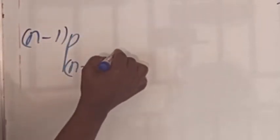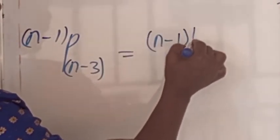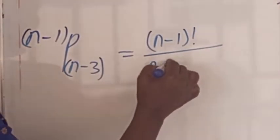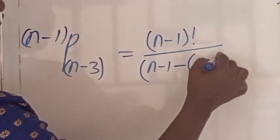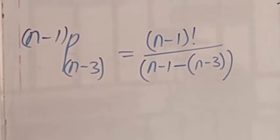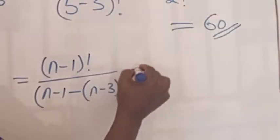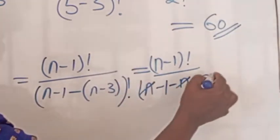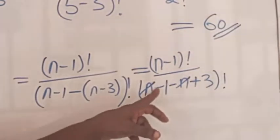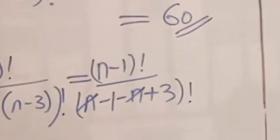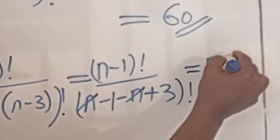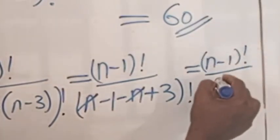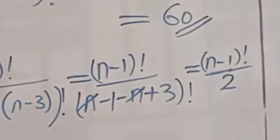Now compute P(n-1, n-3). This equals n minus one factorial over the quantity n minus one minus n minus three factorial. Simplifying the denominator: n minus n is zero, and minus one plus three gives two, so the denominator is two factorial. Therefore P(n-1, n-3) equals n minus one factorial over two factorial, which is n minus one factorial over two.